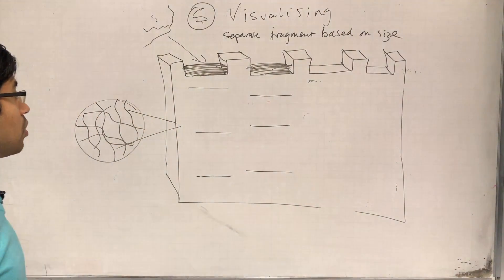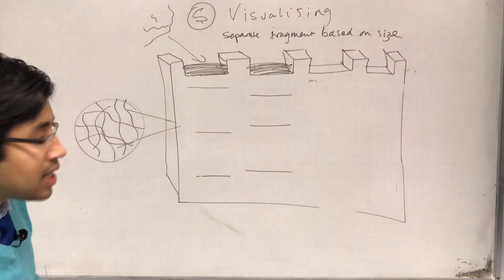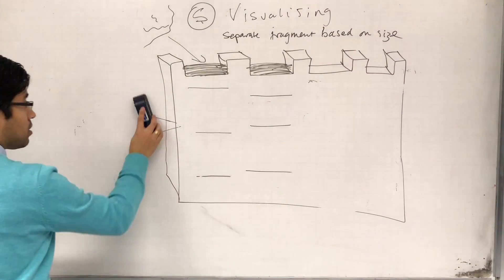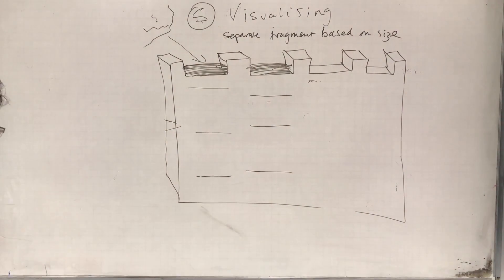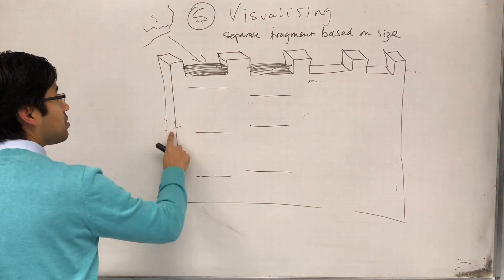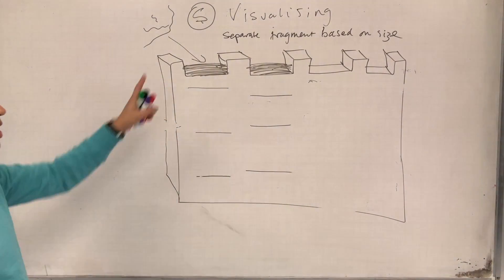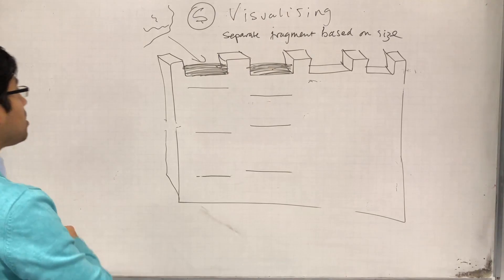Visualizing the bands. And so what we do here is use a technique called probing. We probe the DNA to find out where our sequence that we are interested in is.